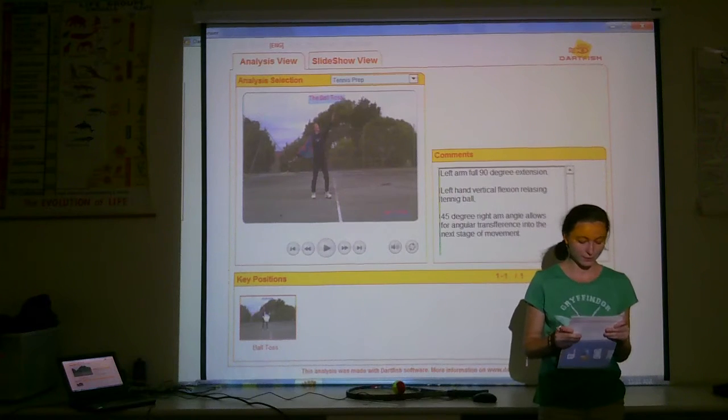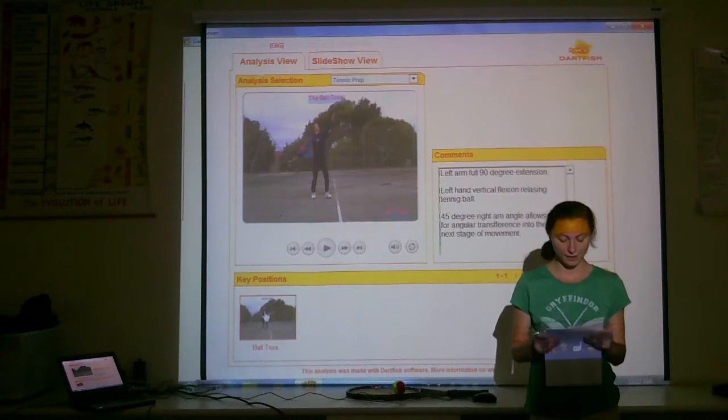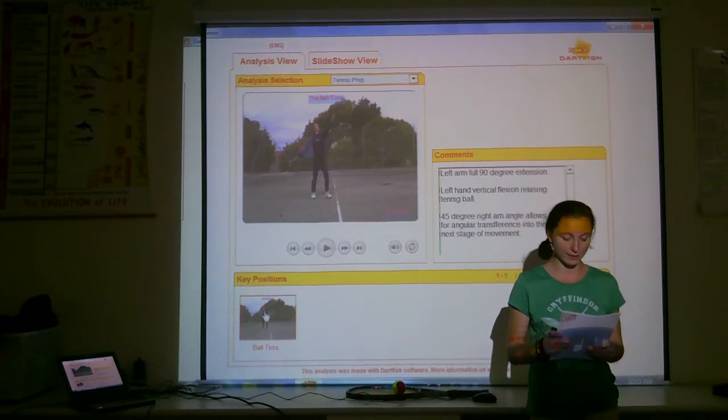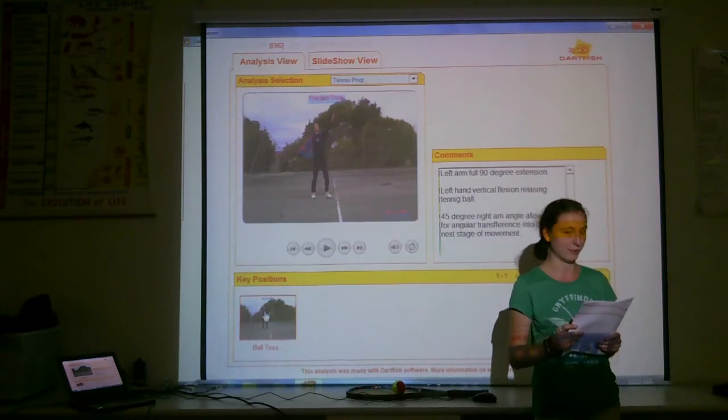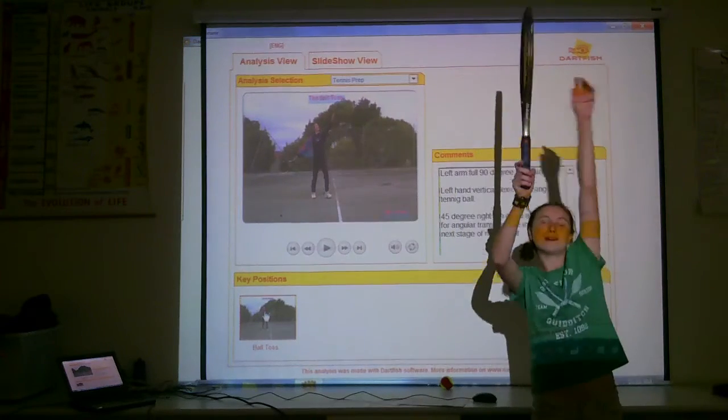At this point, the left arm is fully extended at 90 degrees with a vertical flexion of the left hand. You cannot see it here, but this flexion has released the ball at a projection height of about one meter above the height of myself standing tall with a racket in a vertical position above my head. So it would be one meter above that height.